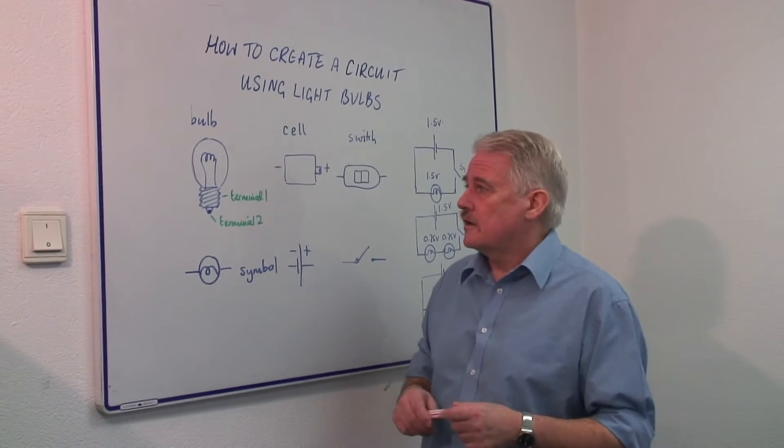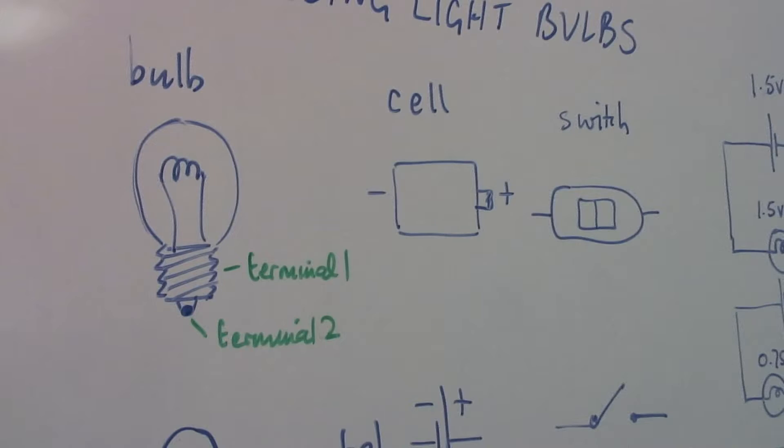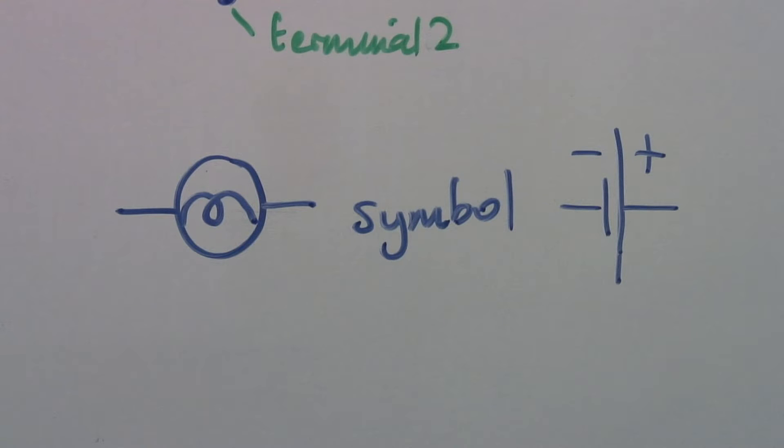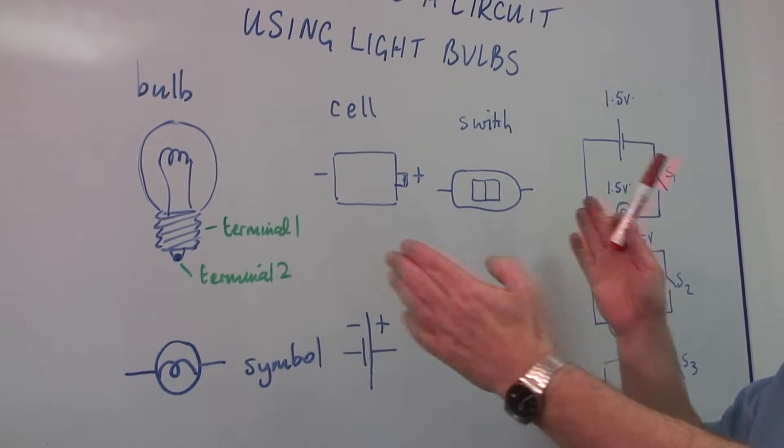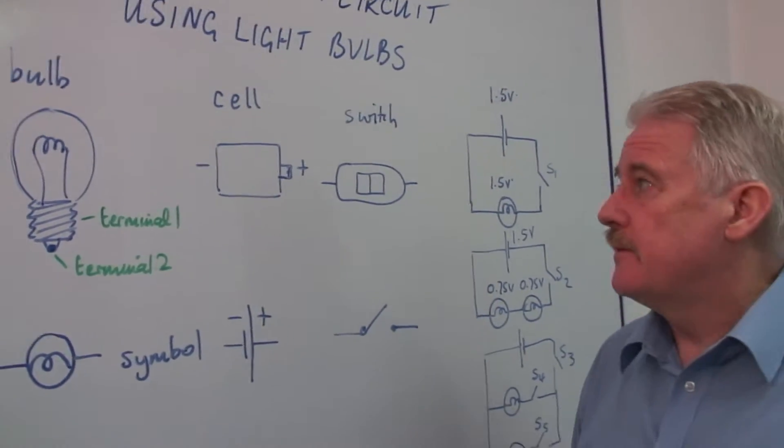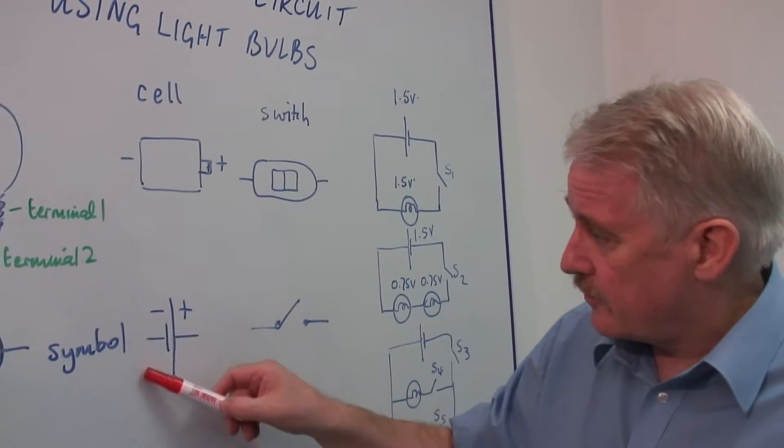Now in my circuit using light bulbs, here is the bulb, and we have a symbol for a bulb, which is a circle with a squiggle in the middle. We have a cell, and if we've got more than one cell, we call it a battery. But this is a cell, and that's the symbol for a cell.